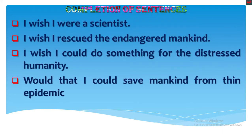Now look at these sentences very carefully. 'I wish I were a scientist.' You may be surprised looking at the use of 'were' with the subject — don't be surprised, I will explain. Second: 'I wish I rescued the endangered mankind.' Third: 'I wish I could do something for the distressed humanity.' Fourth: 'Would that I could save mankind from this epidemic.' These are called subjunctive mood in English — 'Sapekho bhavet kriya' in Bangla. If you memorize these four sentences it will be very useful, as these are the ways of expressing subjunctive mood. There are two more ways of expressing subjunctive mood which you will learn later.